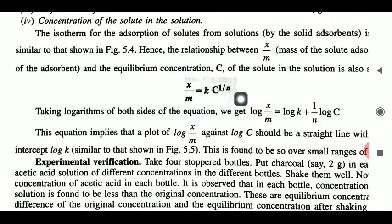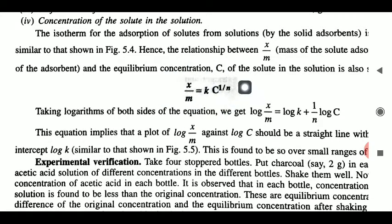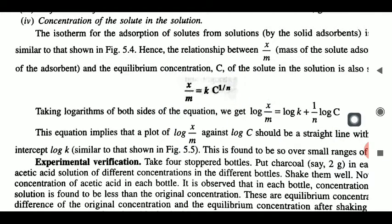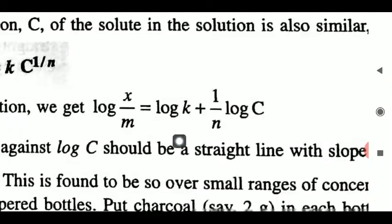अभी तक जो expression में बात की थी वहाँ पर p आया था। अगर adsorb होने वाला content liquid form में है, तो in place of pressure we use concentration c। So the extent of adsorption: x/m = k × c^(1/n)। Taking log: log(x/m) = log k + (1/n)·log c। This is the expression of Freundlich adsorption isotherm whenever the adsorbate is present in liquid form।